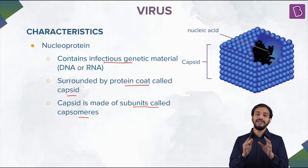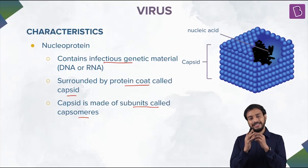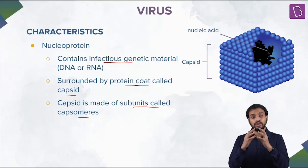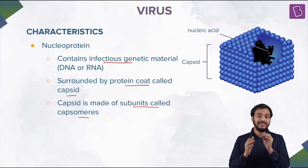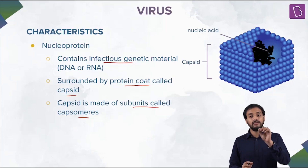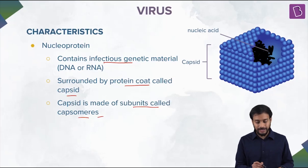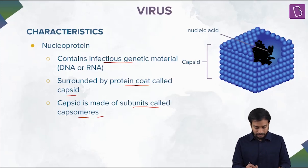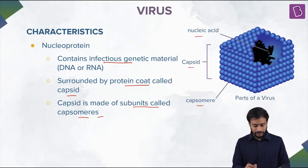So the overall structure: a virus is nothing but nucleoprotein — nucleic acids and proteins. The nucleic acids are present inside a protein coat, a protein covering, and these protein coverings are made up of small subunits called capsomers. So: nucleic acids, capsid, and capsomers.